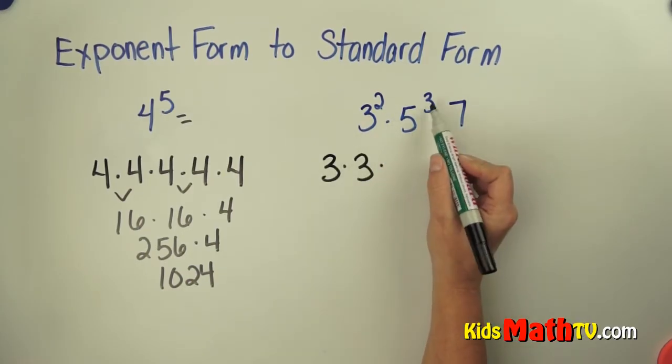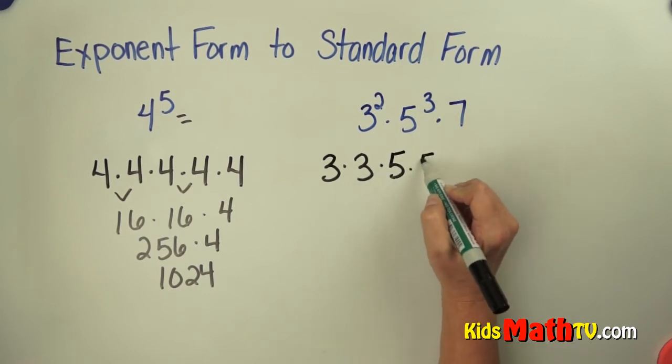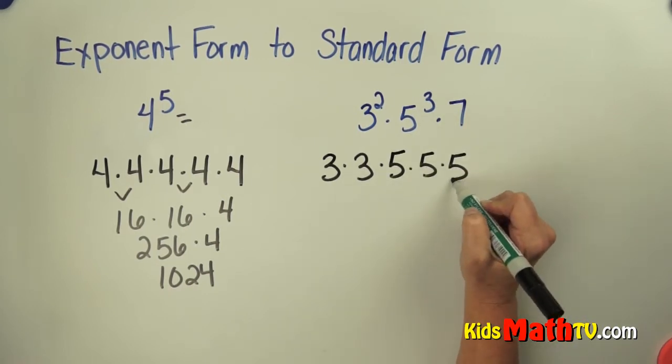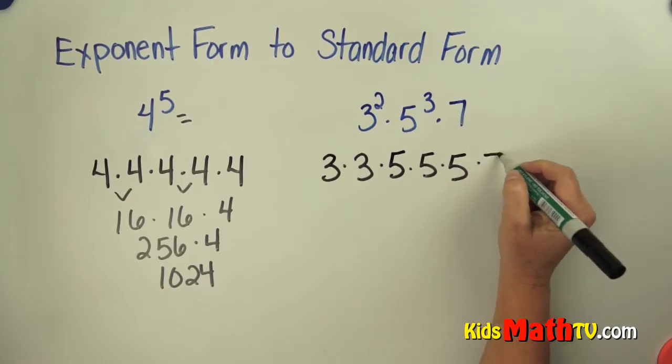This is a base of 5 written 3 times. 5 times 5 times 5. And this one is a base of 7 one time.